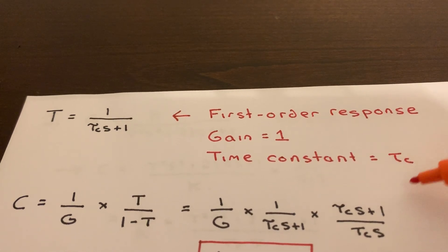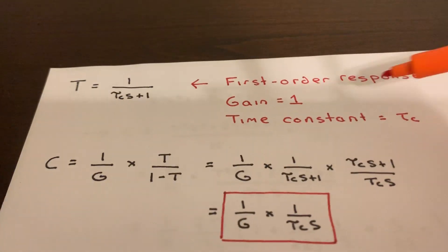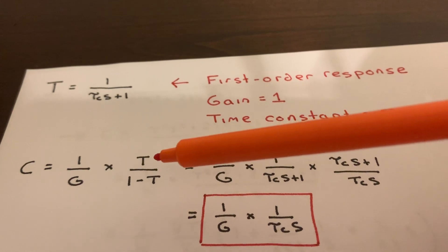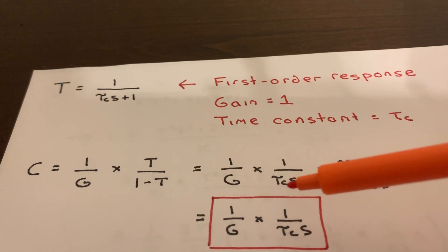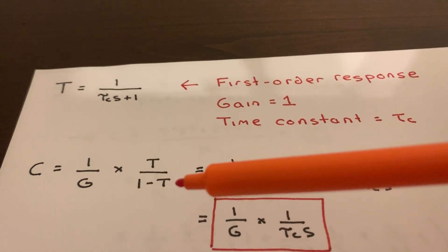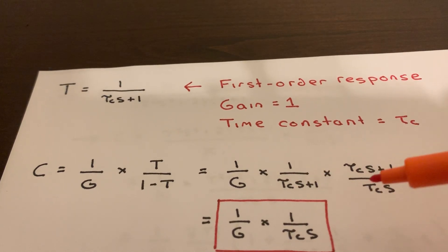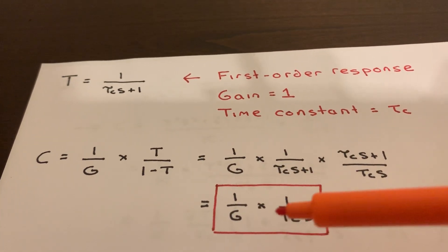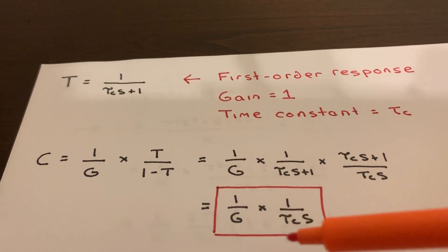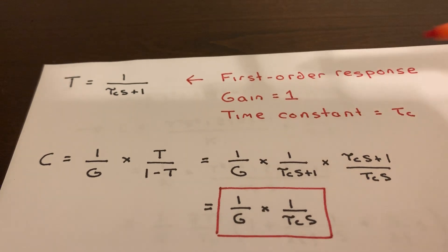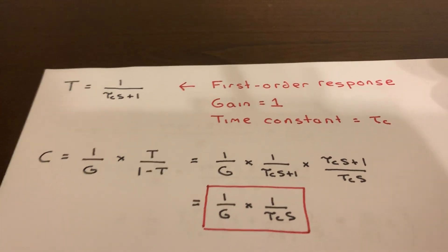If τ_C is big, that means we have a slow feedback controller. If it's small, it means we want a really fast feedback controller. Taking our formula C equals one over G times T over one minus T, and plugging in T equals one over τ_C·S plus one, then one minus T inverted becomes τ_C·S plus one over τ_C·S. These two terms cancel out and we get our final formula: one over G times one over τ_C·S. This controller, given G, will give us a closed loop response with time constant τ_C and a gain of one.